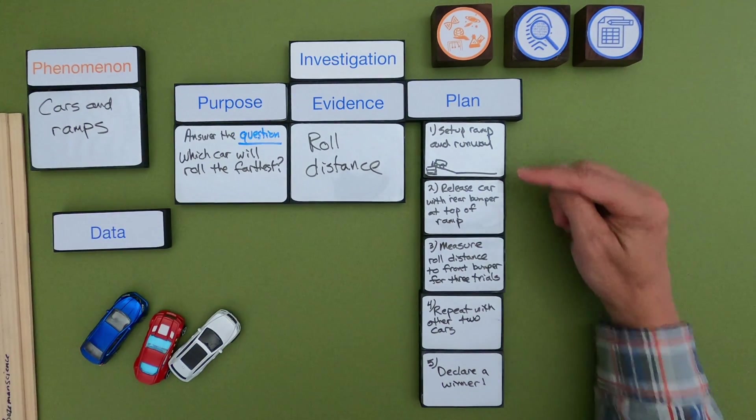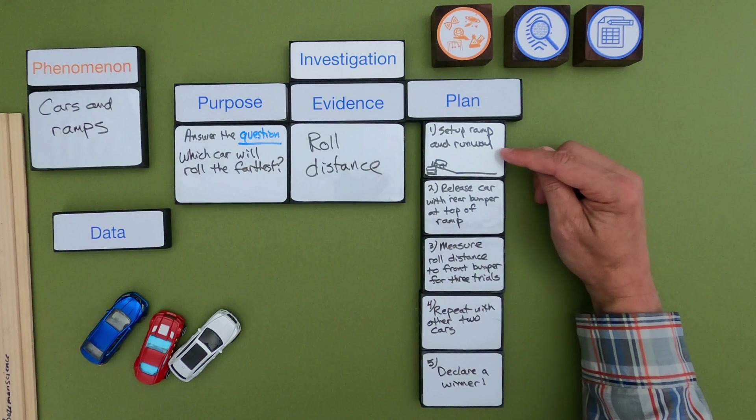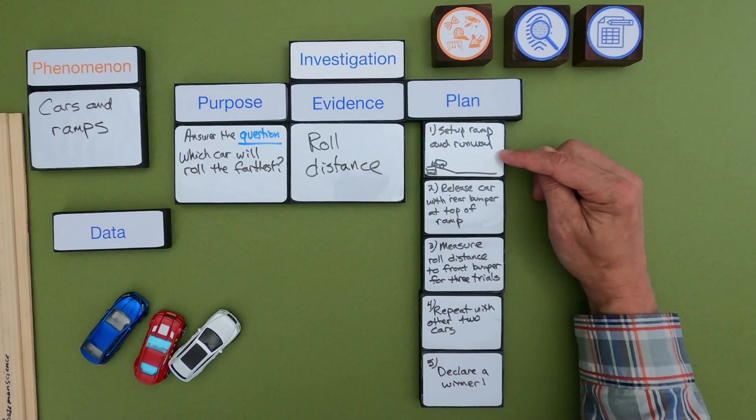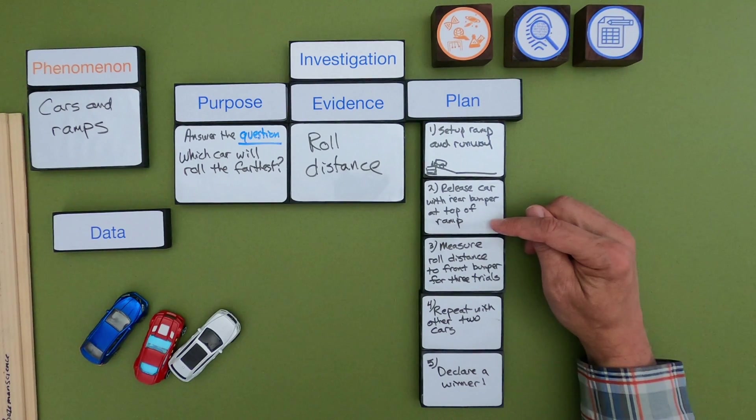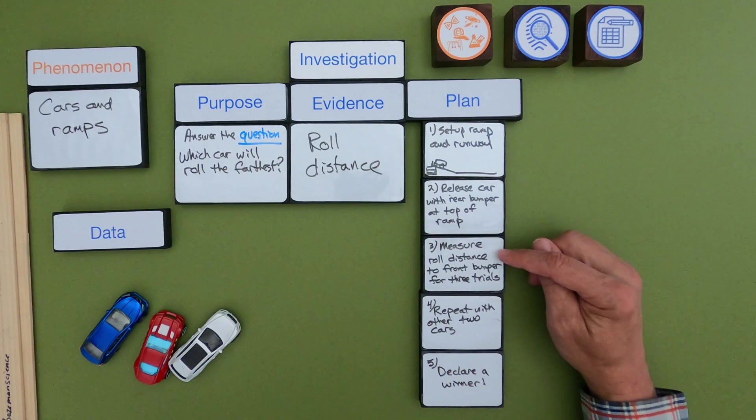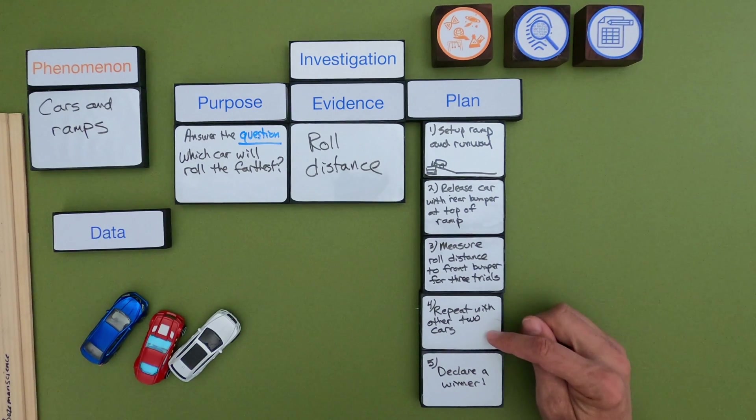Okay so as I think about my plan what I'm going to have the investigation do is set up the ramp and the runway, release the car with the rear bumper at the top of ramp, measure roll distance to the front bumper for three trials, repeat with the other two cars, and then declare a winner.